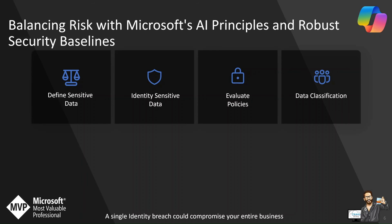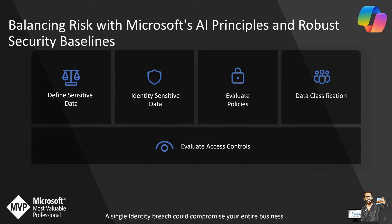You can start with a straightforward approach by adopting a single label such as Confidential or Highly Confidential, which can significantly enhance the protection of your most sensitive data. Purview's trainable classifier is a tool that can be trained to recognize different types of content by feeding it data samples. Over time, as your organization becomes more accustomed to this practice, you can introduce additional labels and leverage more tailored classifiers.